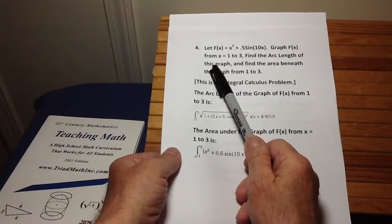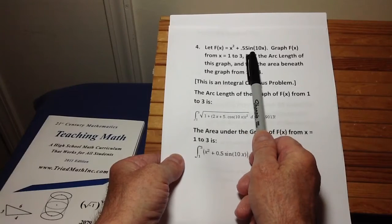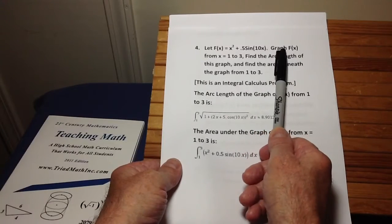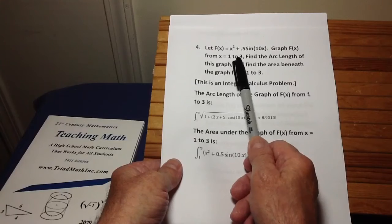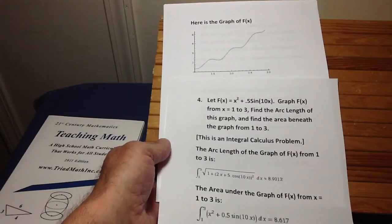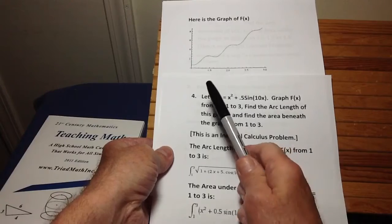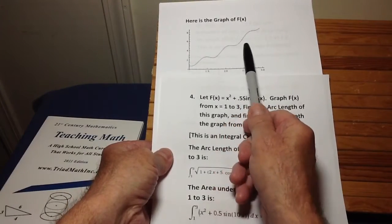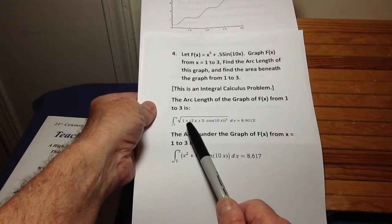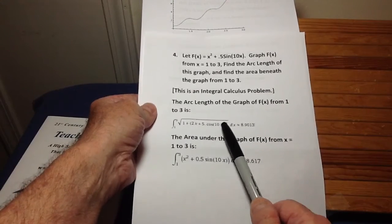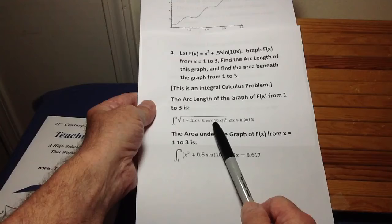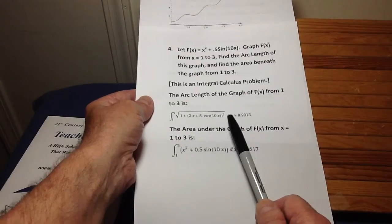In studying STEM subjects, physics and chemistry and so on, you come up with all kinds of functions. Here's a pretty simple function, x squared plus 0.5 times the sine of 10x. You want to graph the function, let's say from 1 to 3, and then you want to find its arc length, and you want to find the area underneath this function. So now you're talking about an integral calculus problem. Wolfram Alpha will graph it for you. There's the graph of it. And by the way, you can apply the techniques we just learned to find the maximum and the minimum and the points of inflection using differential calculus. But what about the arc length? There's a formula for it. You take the derivative of the function, square it, plus 1, take the square root, and integrate it.